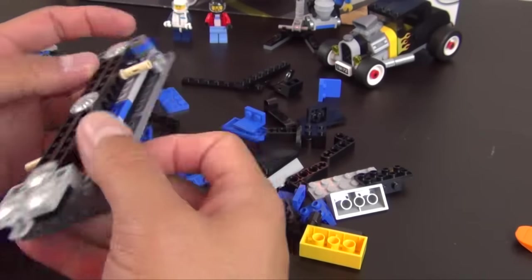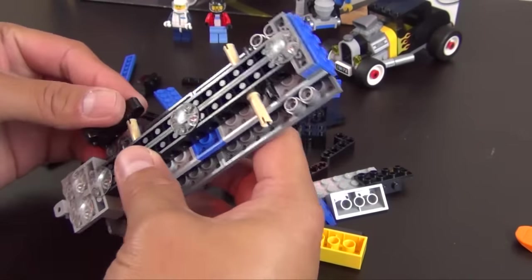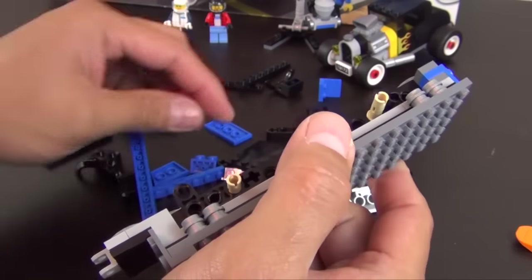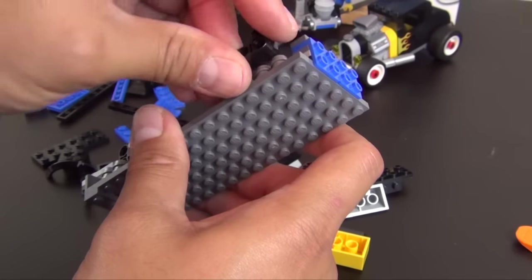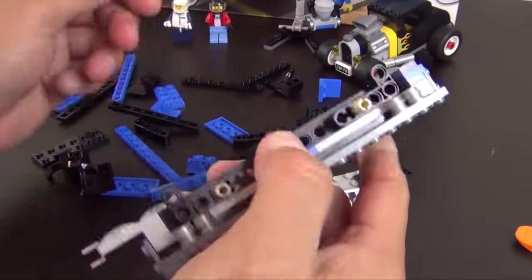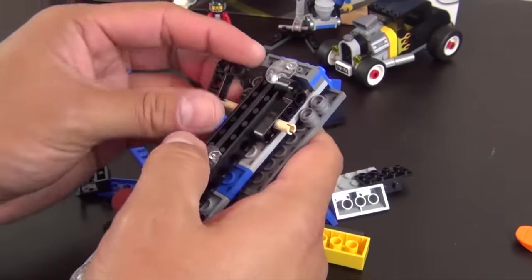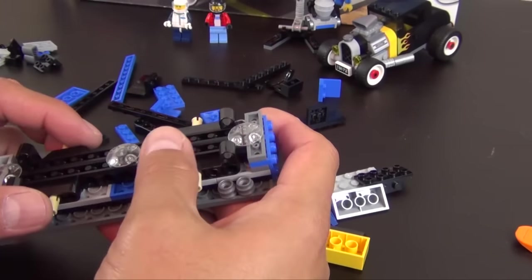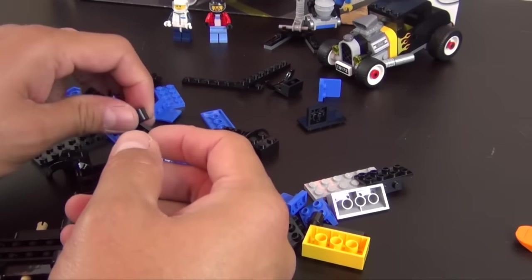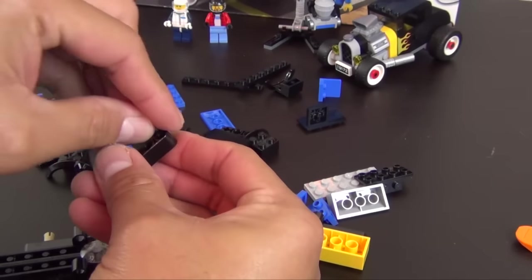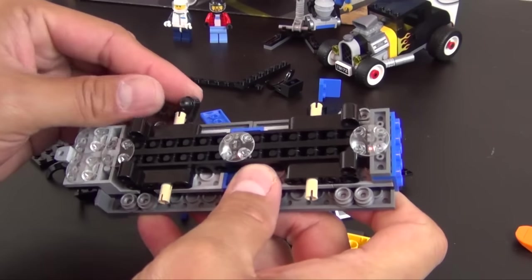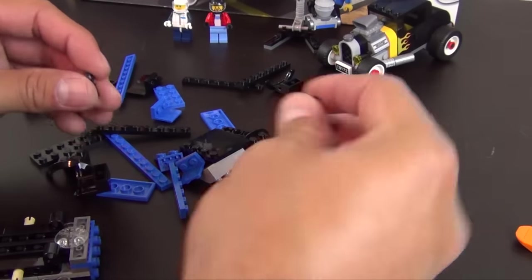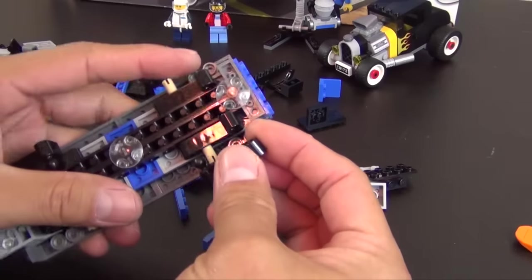Turn this back over and we have some L-shaped technic lift arms. Here we're going to go on these technic pins that are exposed. Next we have towball pieces that go in this one, and a towball piece in this one.